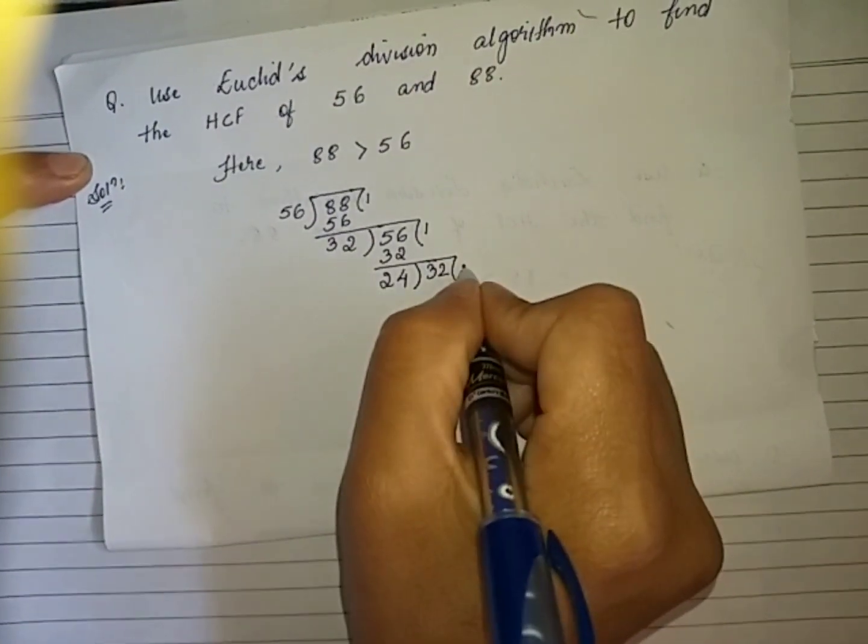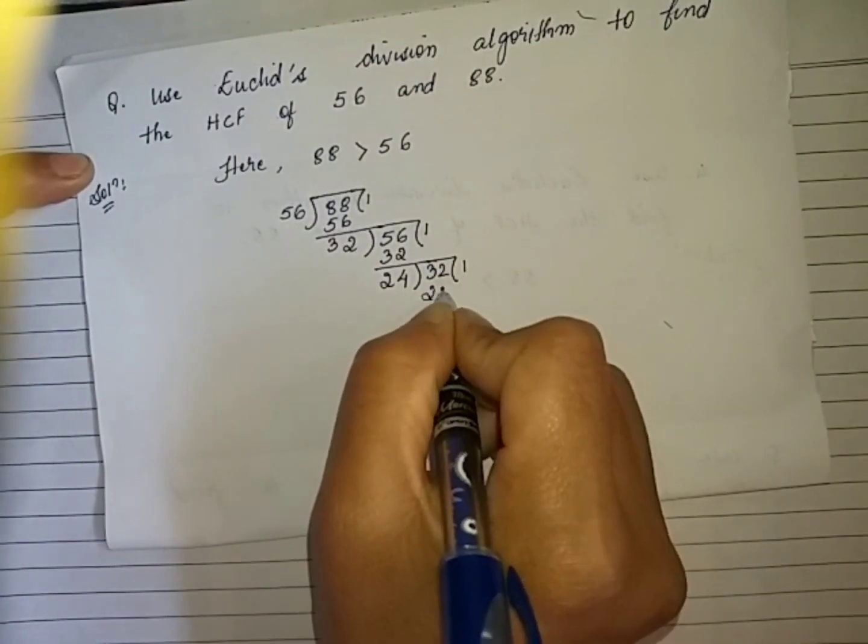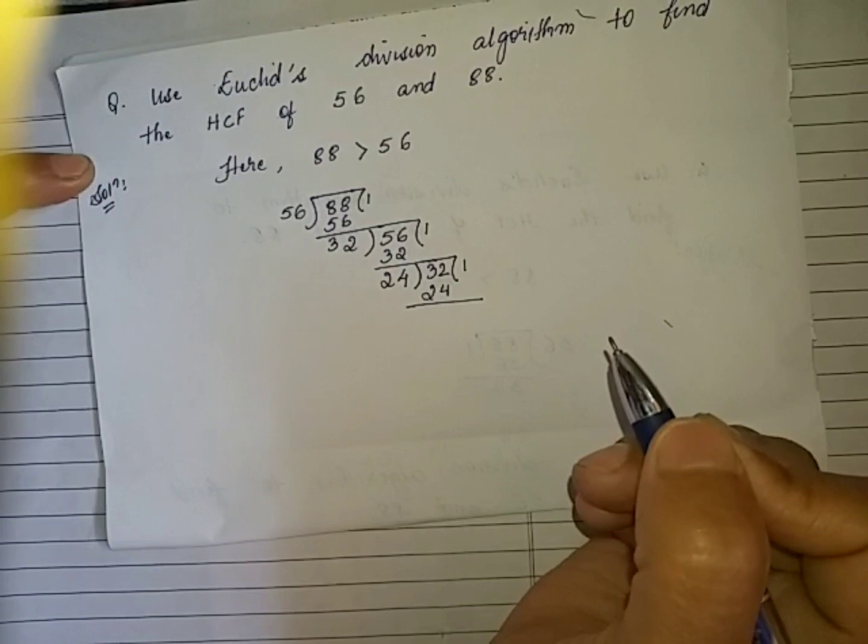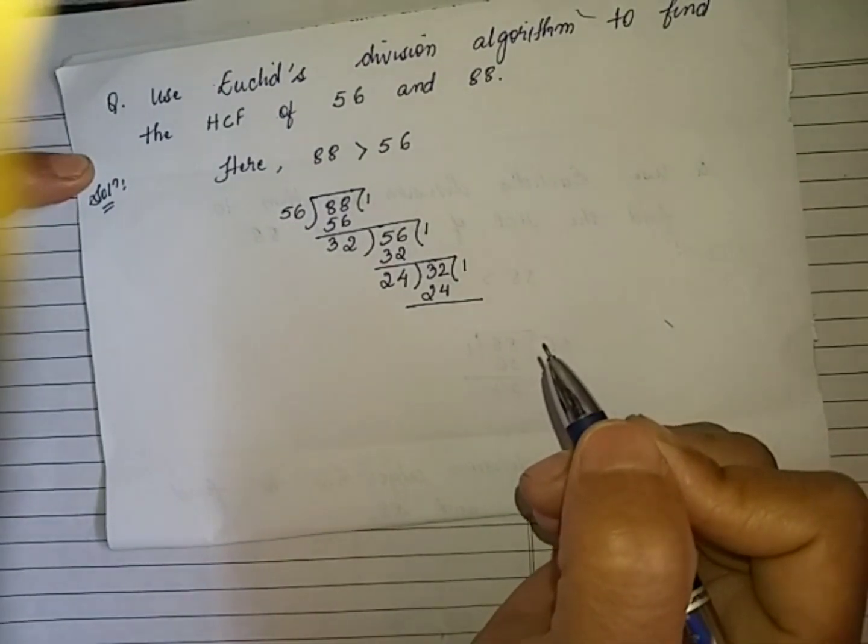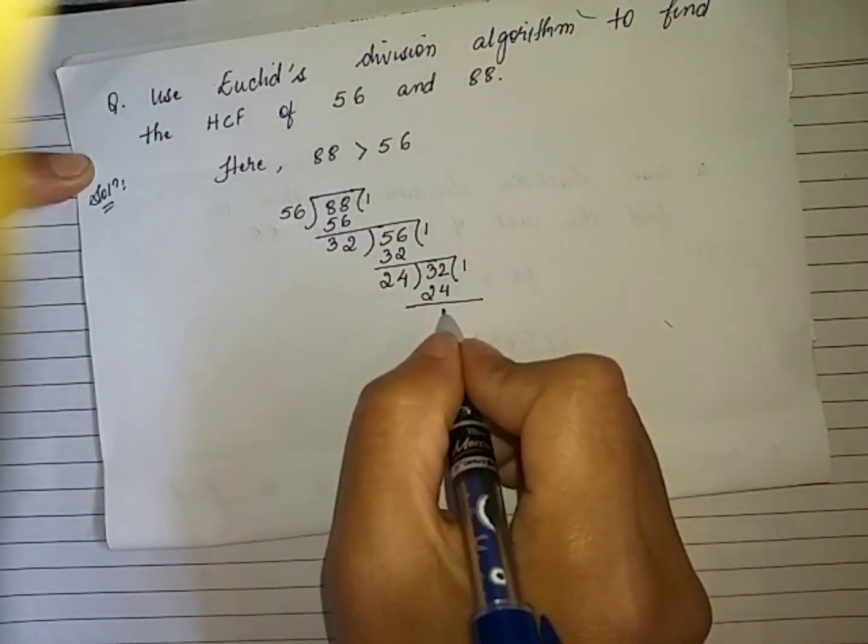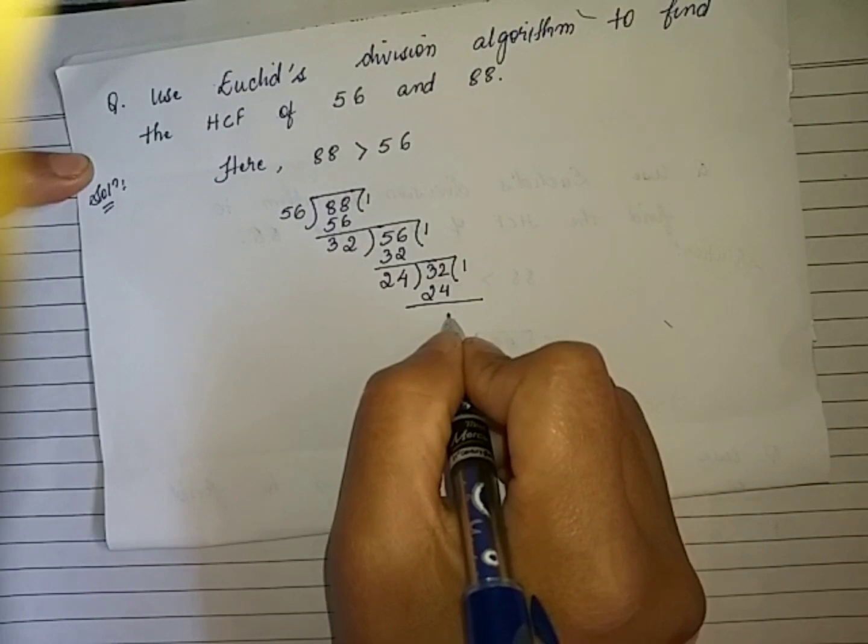24 into 1 will be 24, and the remainder is 8.